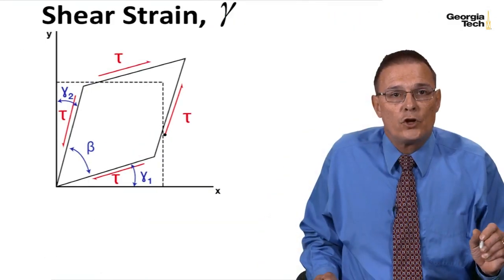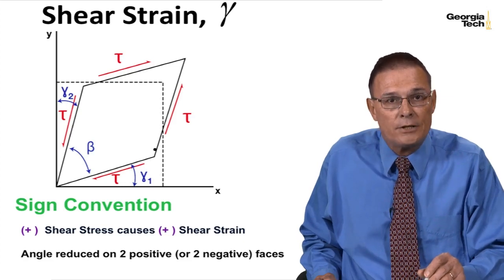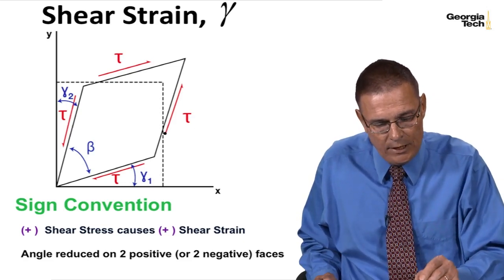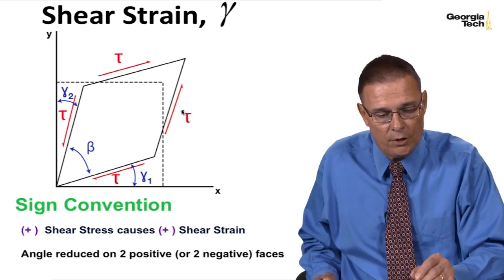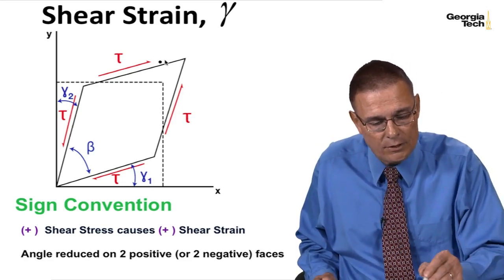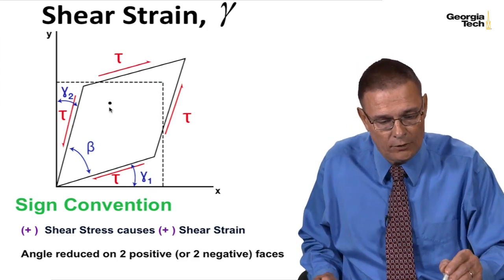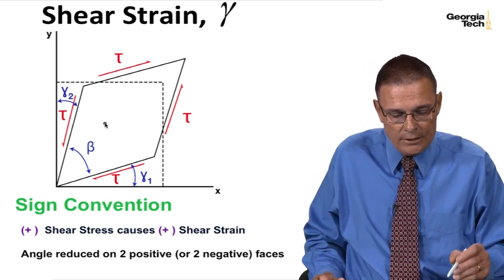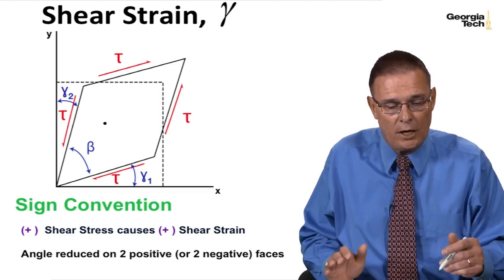So for shear strain sign convention, I show my stress block with a positive shear stress. On the positive X face, we have positive Y direction shear. And on the positive Y face, we have positive X direction shear stress. And so the positive shear stress that's being applied causes positive shear strain.